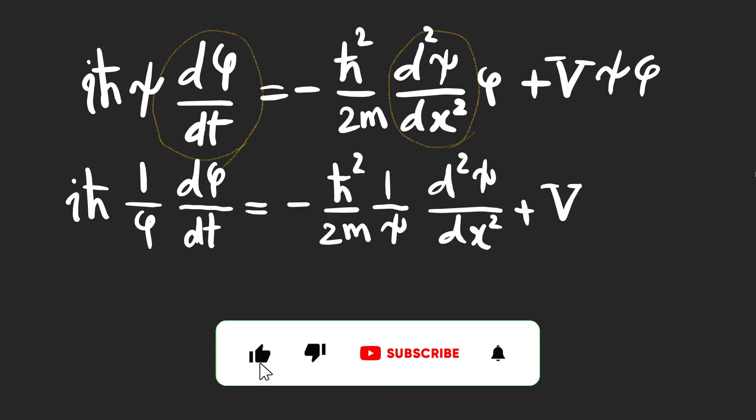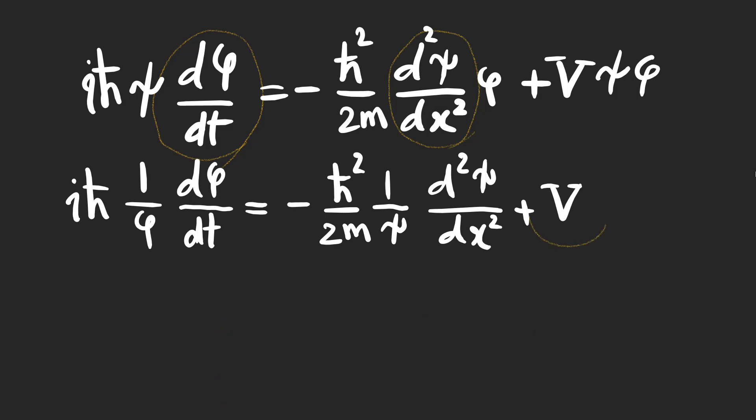By rearranging the equation like this, now the left side is just a function of t and the right side is just a function of x. Note that we suppose that V is just a function of x.